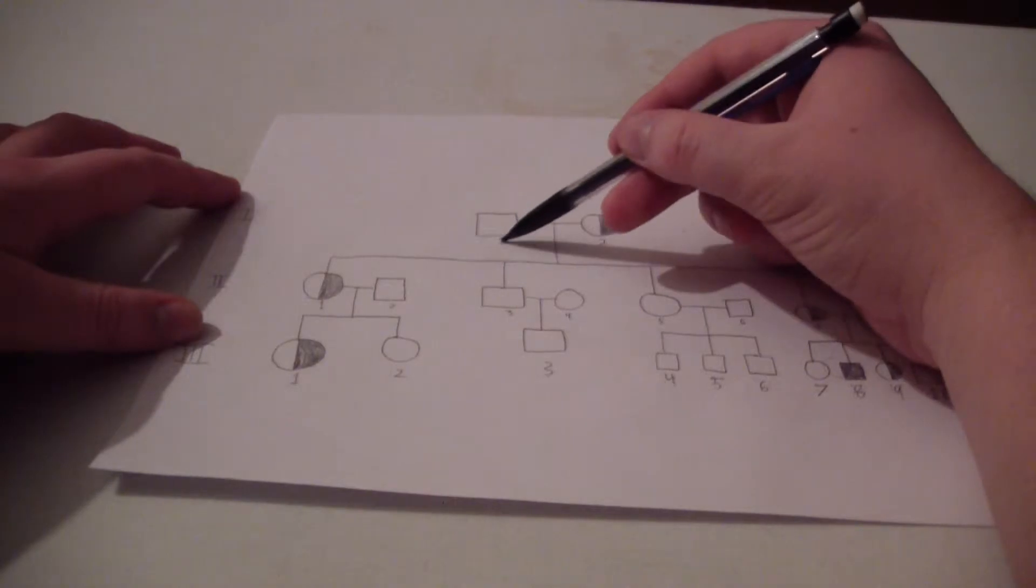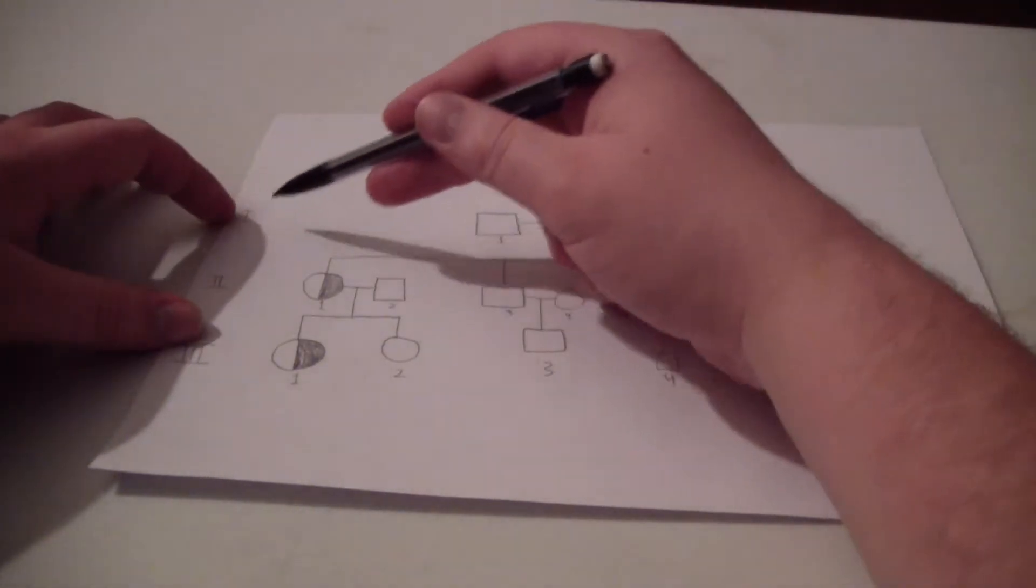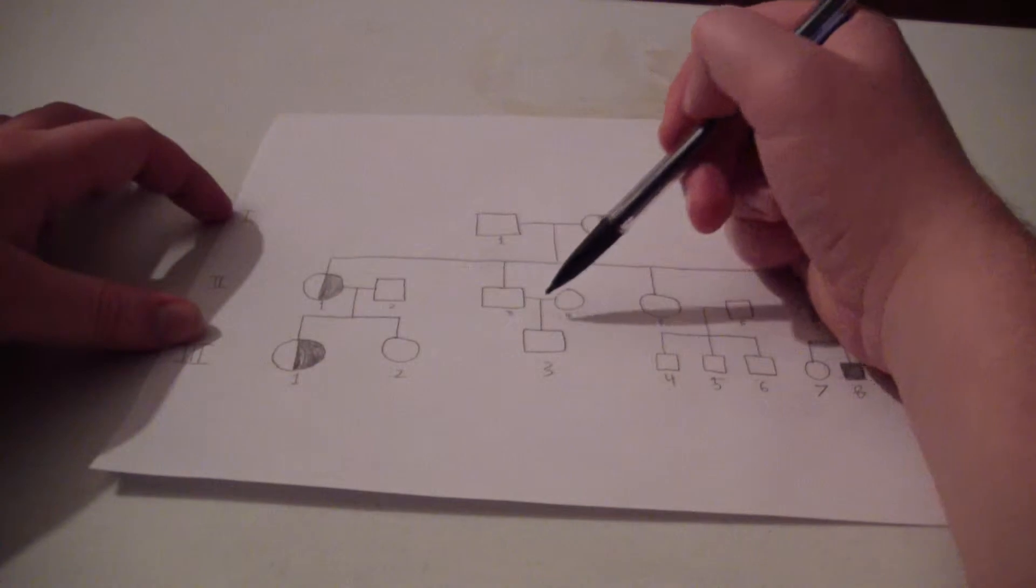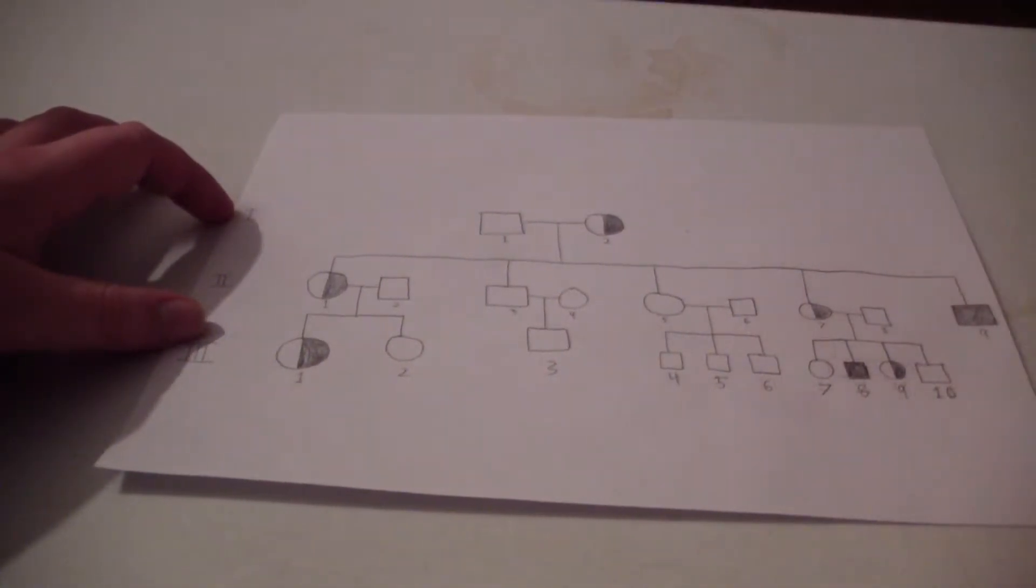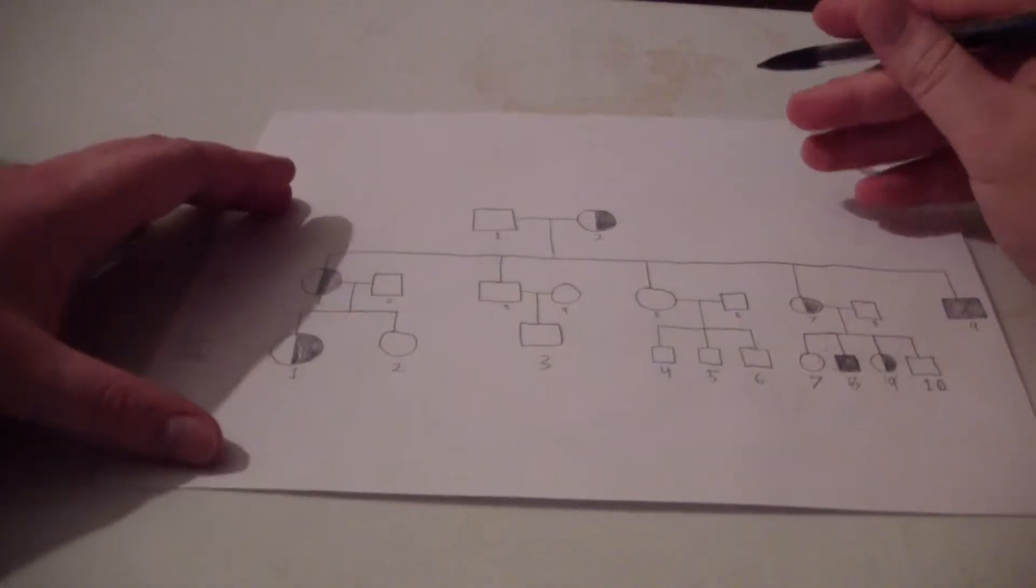We have individual 1, individual 2 for generation 1, individual 1, 2, 3, 4, etc. for generation 2. You get the idea. If not, leave a comment in the box.